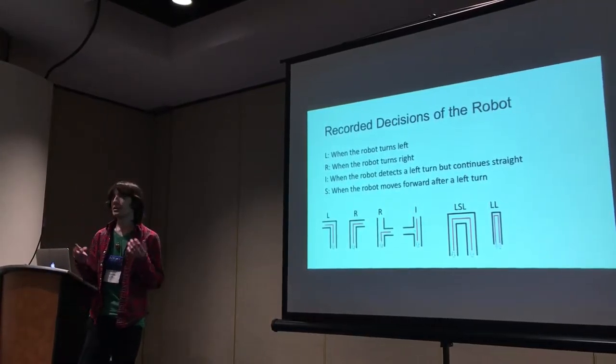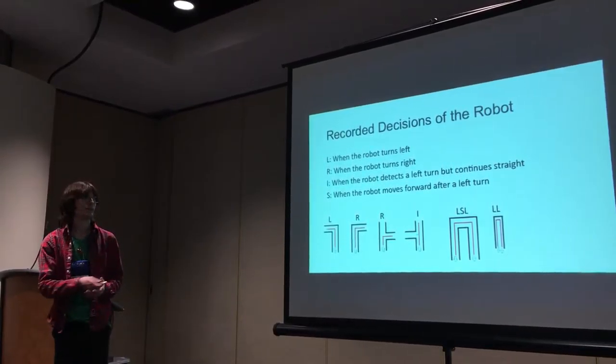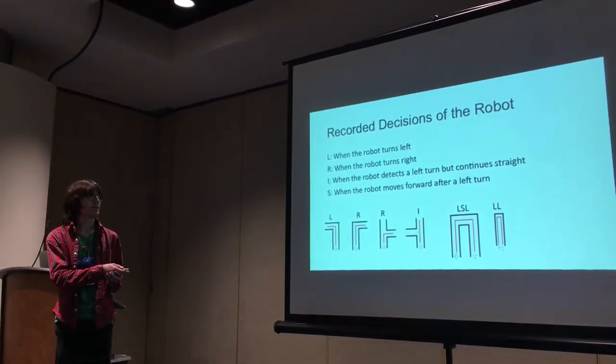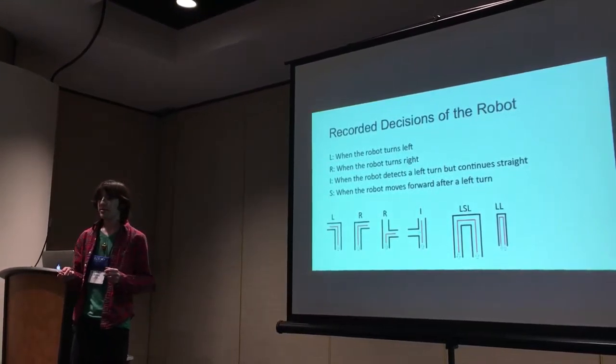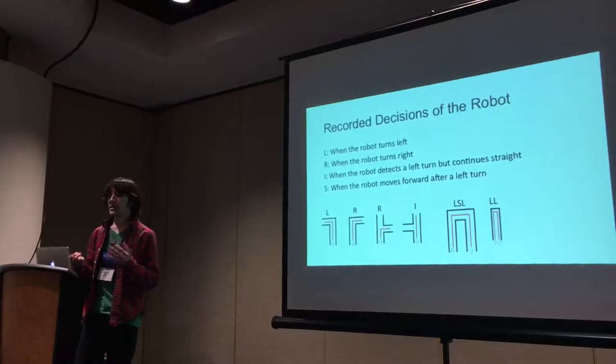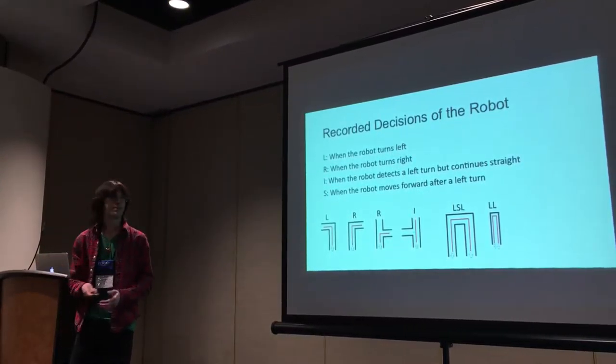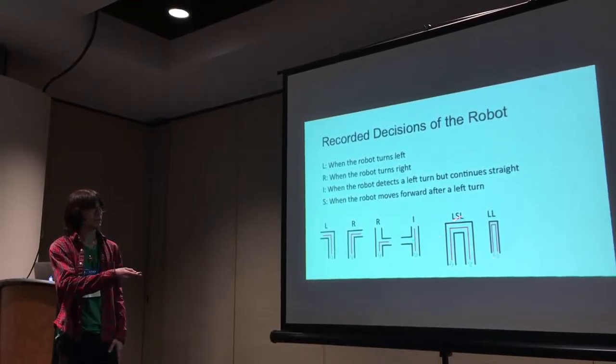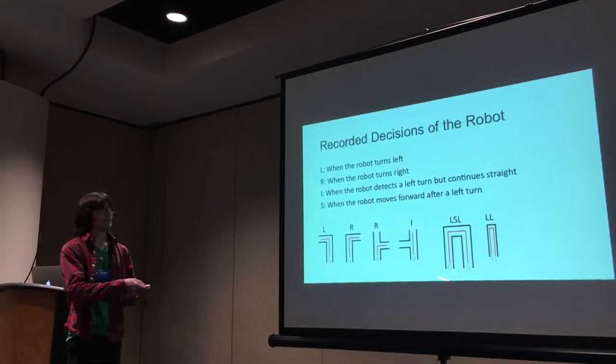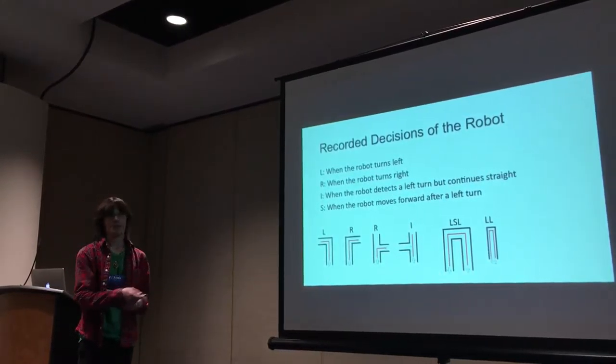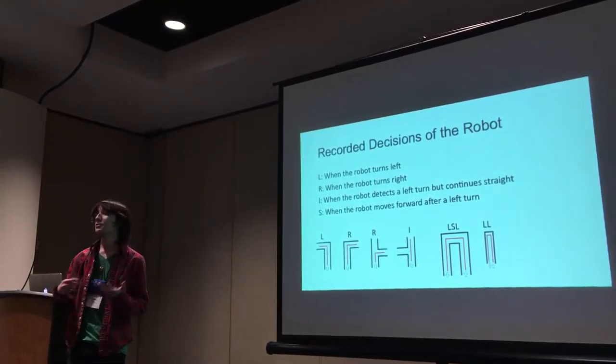It records an I, which stands for ignore, when it sees a left turn but continues straight because we're only following the right wall, as shown here. The last thing it records is an S when the robot moves forward a bit after a left turn. This is crucial to the algorithm because it lets us distinguish between these two parts of the maze. An L followed by an S and an L means we enter one way and come out through a different path, whereas two L's means we've essentially turned around.